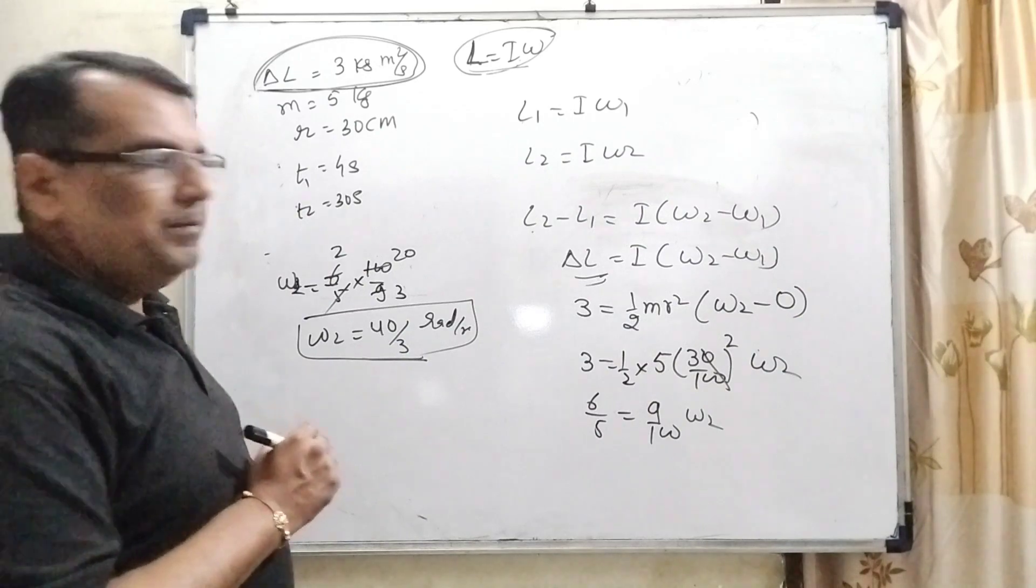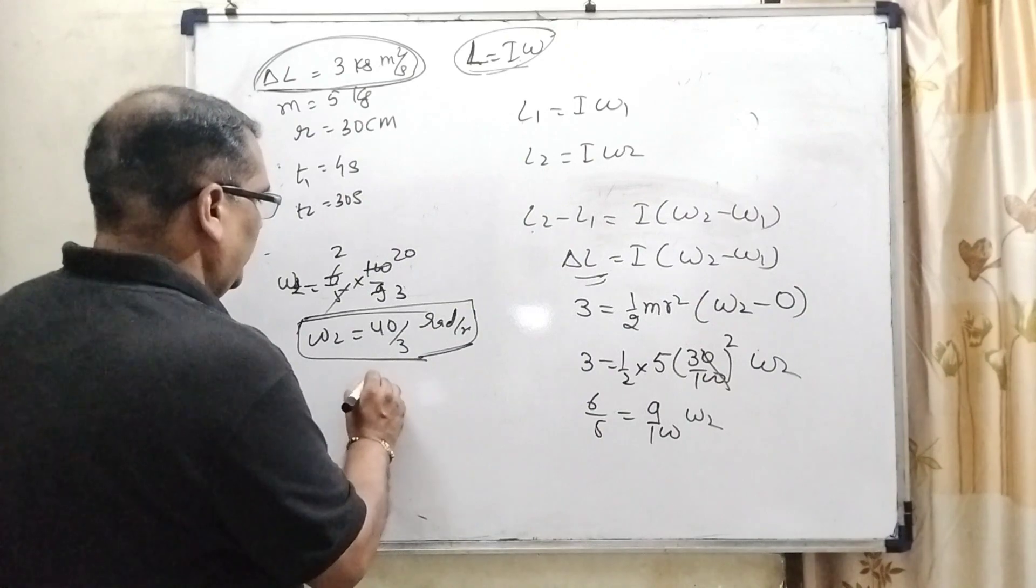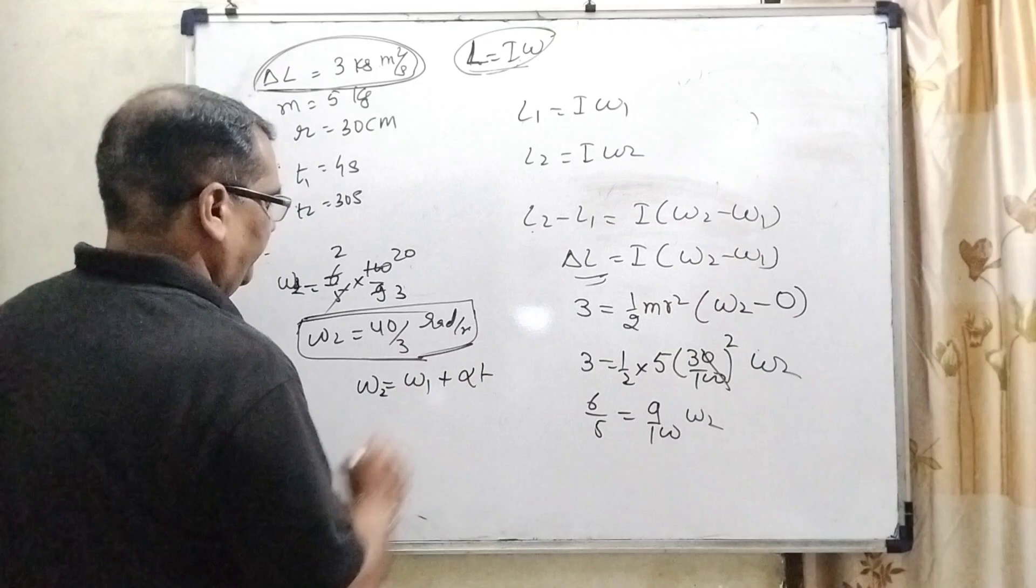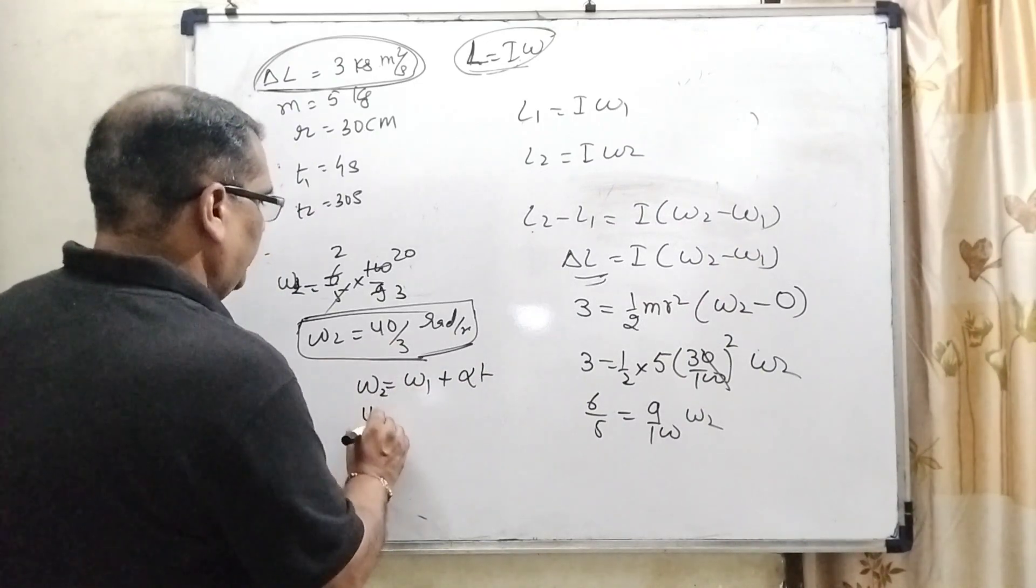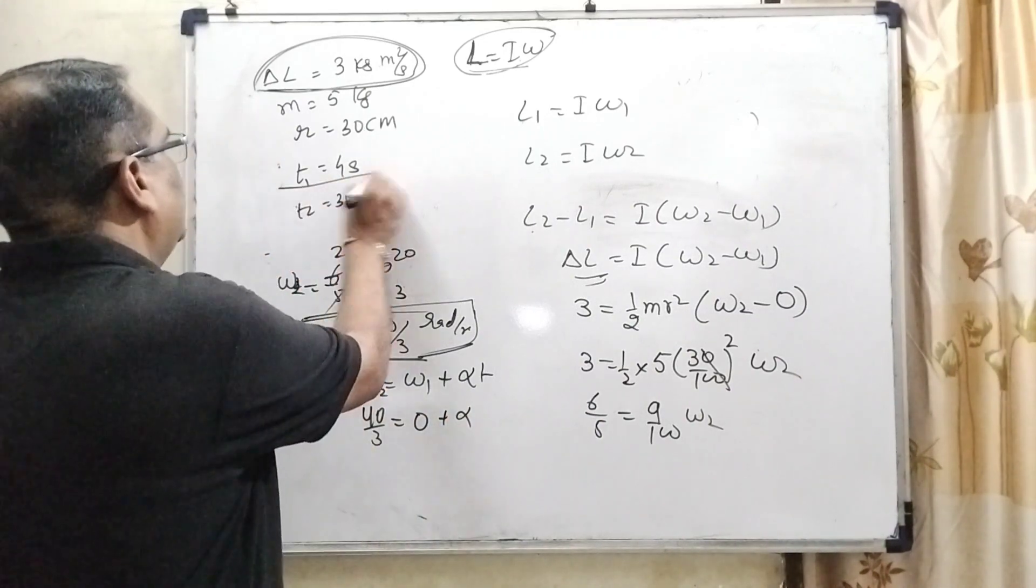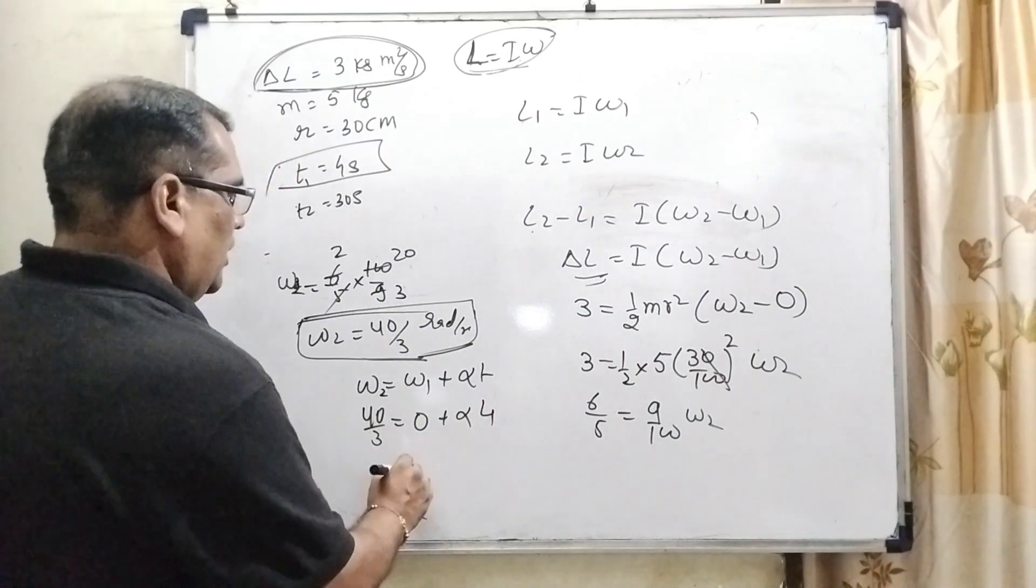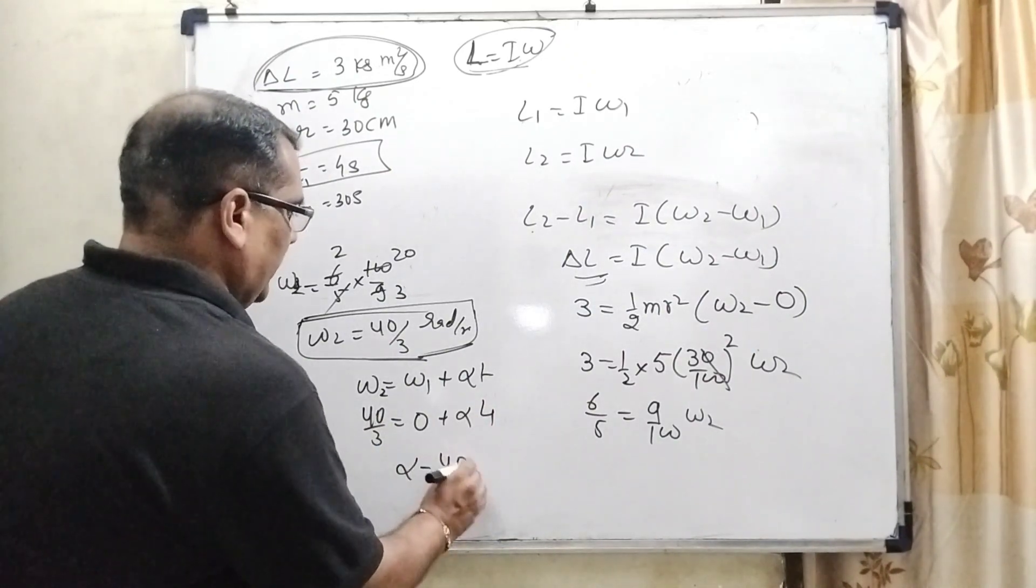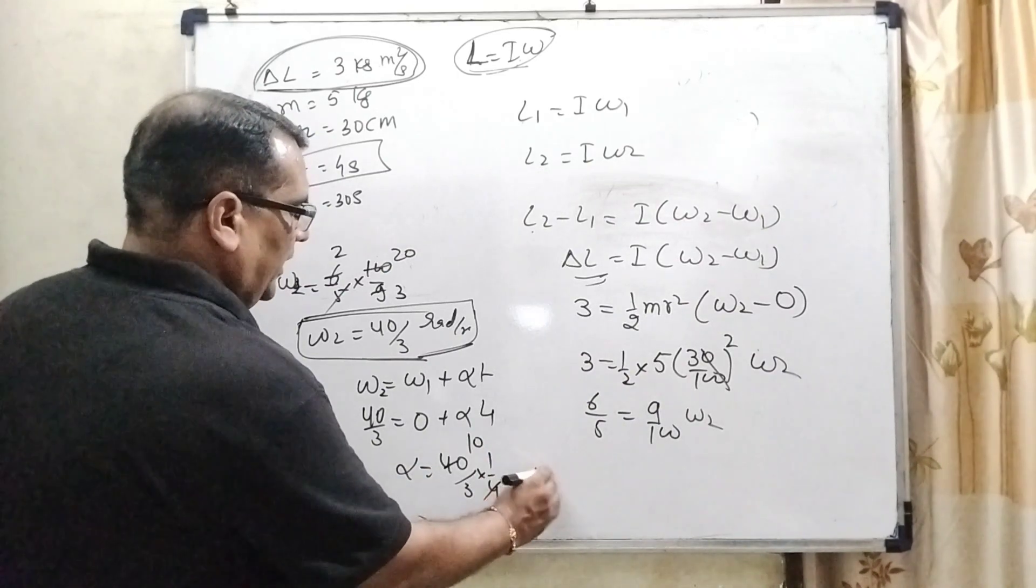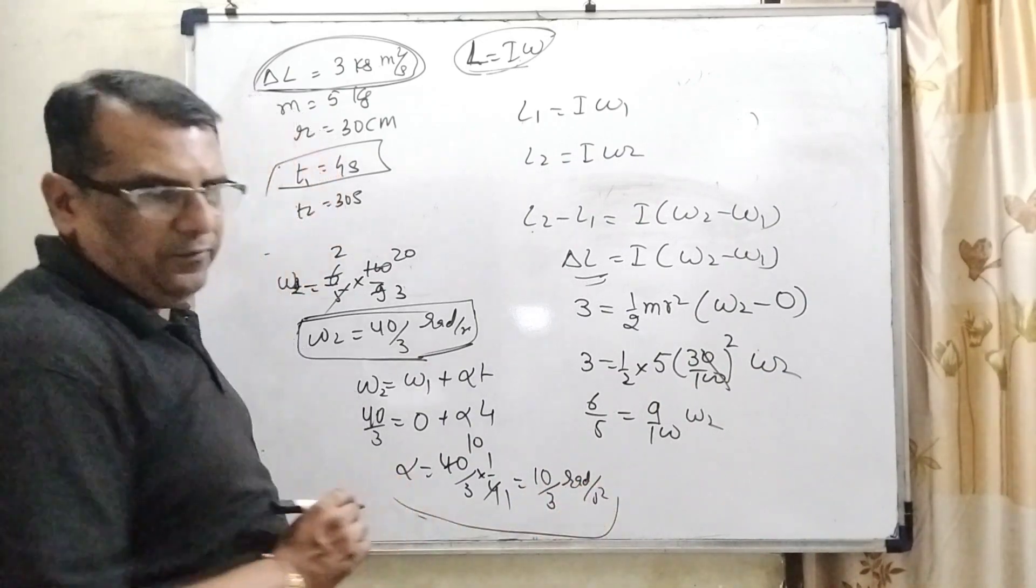Now we have to find alpha. Again, we are using the rotational kinematic first equation: ω₂ = ω₁ + αt. So here we have 40/3 = 0 + α × t. What is the time? The time interval given is 4 seconds. So substituting t = 4, we get α = (40/3) × (1/4) = 10/3 radians per second squared. We have obtained the value of alpha.